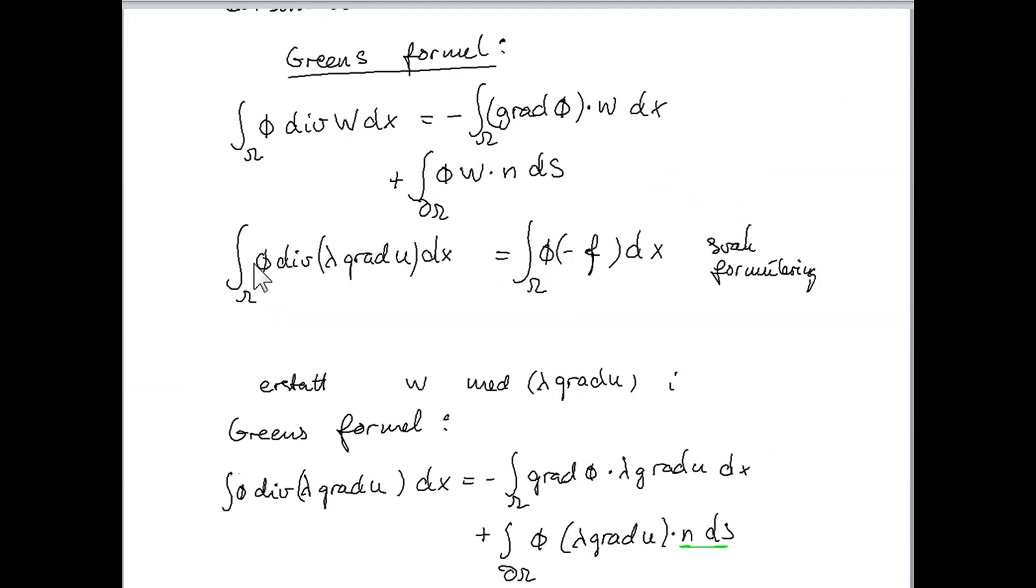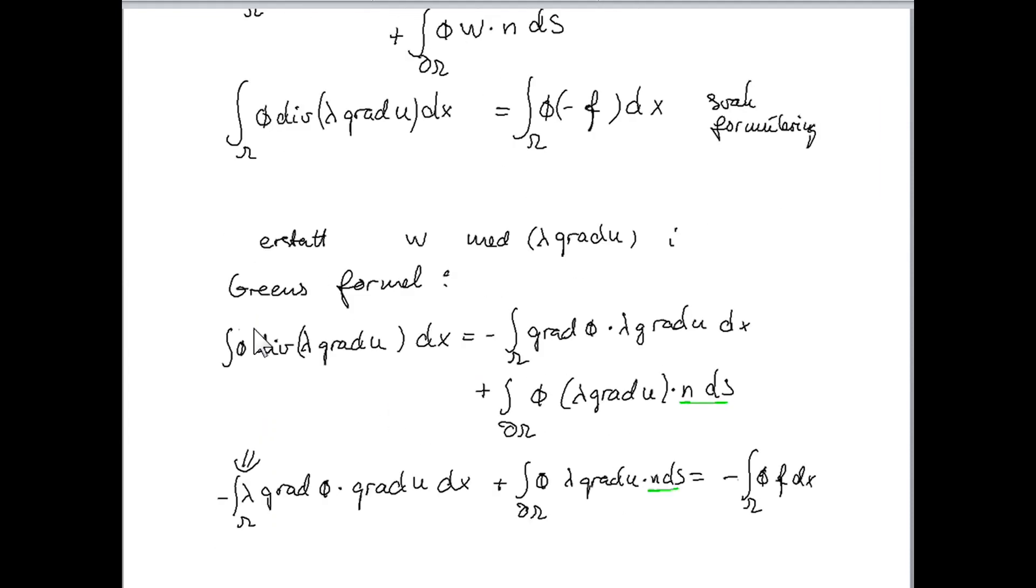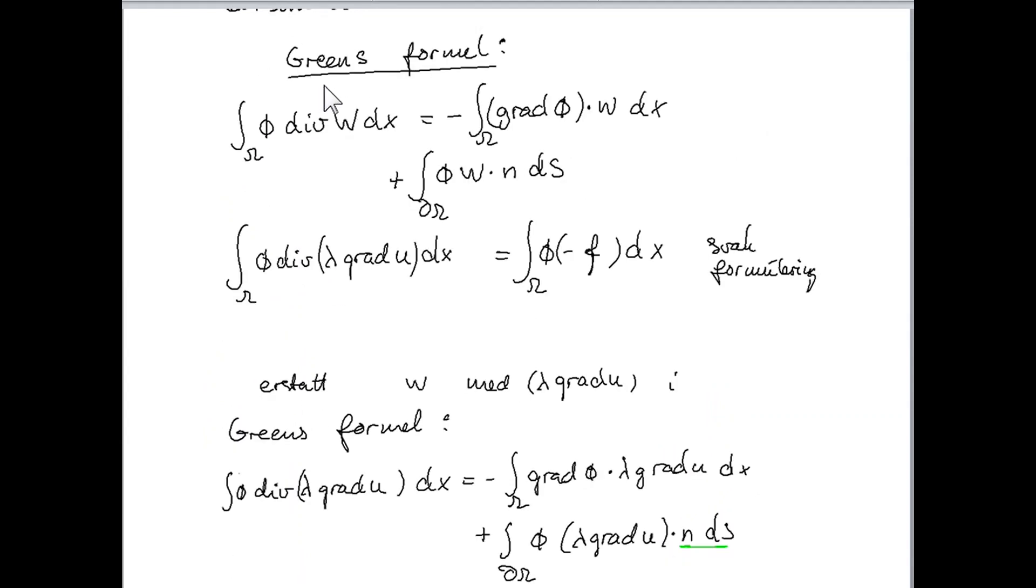So we are first multiplying with this function phi on both sides and integrating, and using the Green's formula here. Just recall, instead of using w here in the Green's formula, we use now lambda grad u. So now we have replaced w by this in all terms. So here we have replaced it, and here we have replaced it. Then we obtain this. This Green formula turns into this equation.